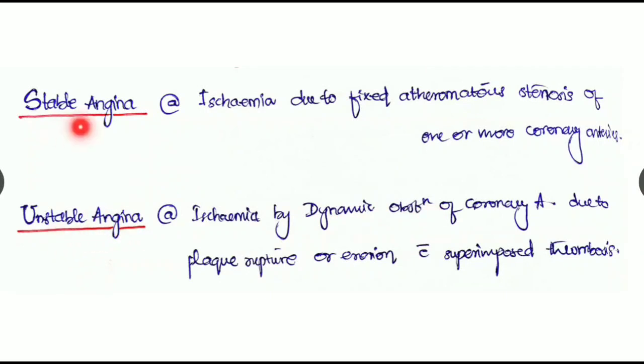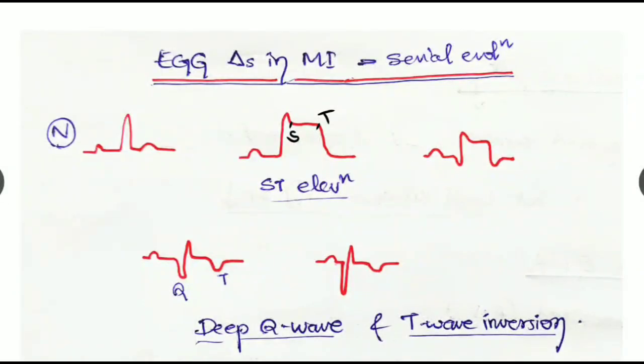Keep in mind the dynamic obstruction in unstable angina whereas stable angina has fixed obstruction. These are the ECG changes in MI with serial evolution. This is the normal ECG with the P wave, the QRS complex, and the T wave. Initially there is ST segment elevation and it progresses and later develops the deep Q wave. The T wave becomes inverted and it progresses with a prominent deep Q wave and T wave inversion.